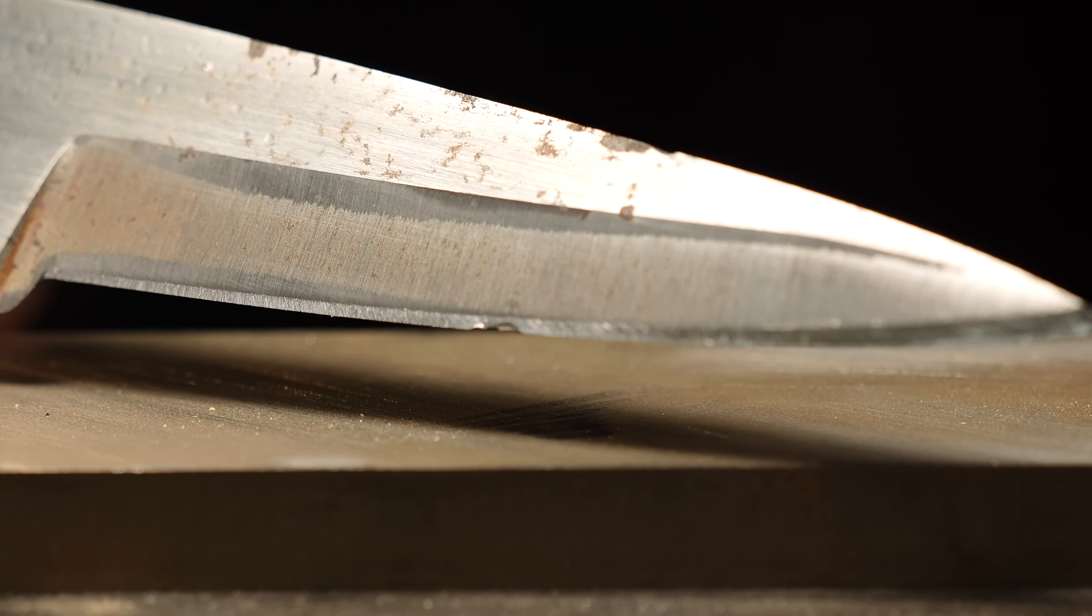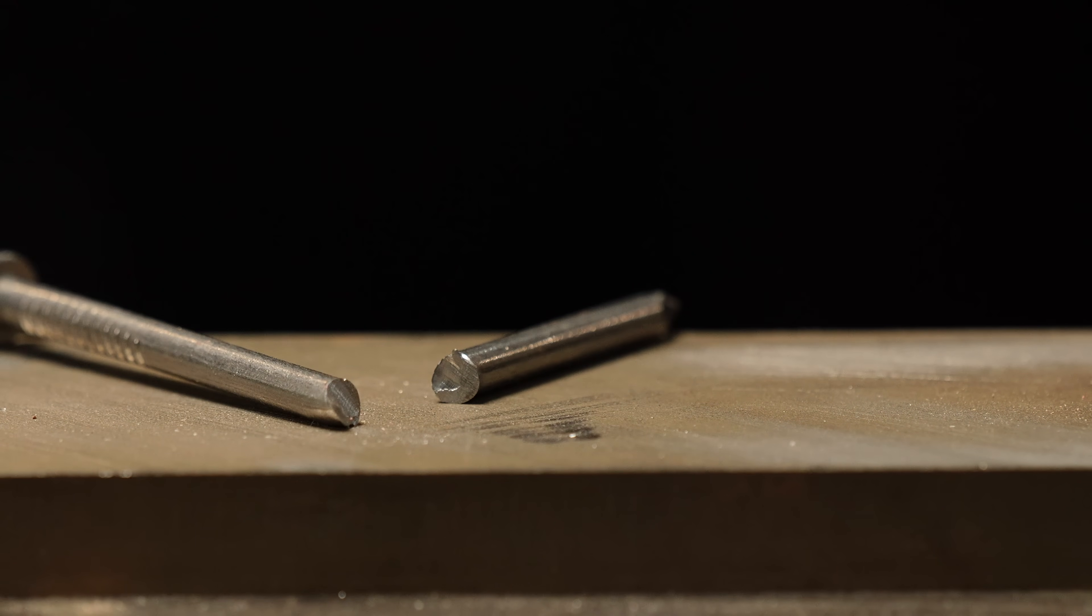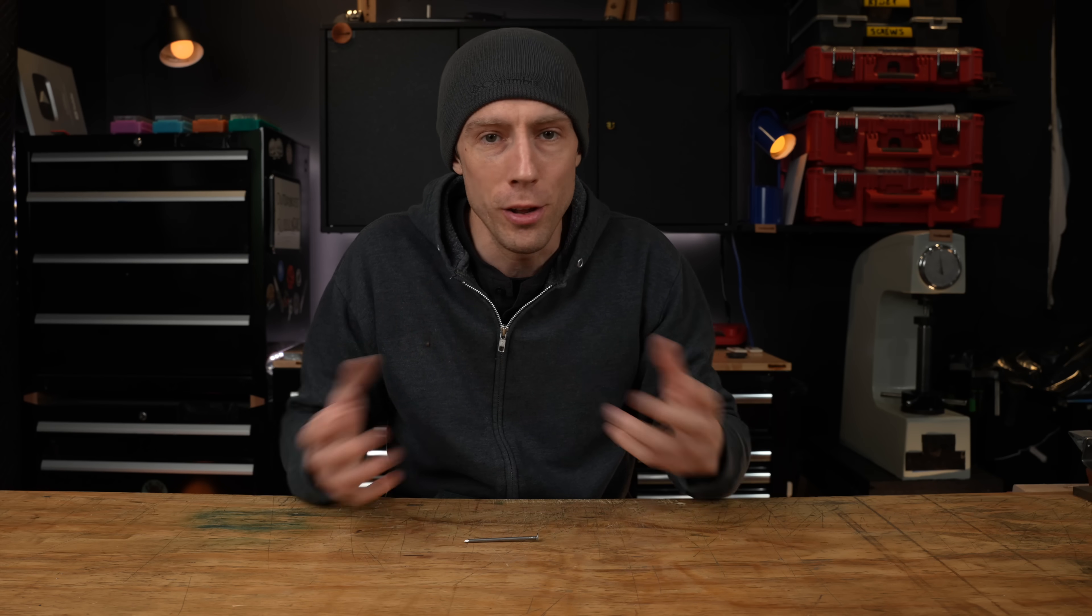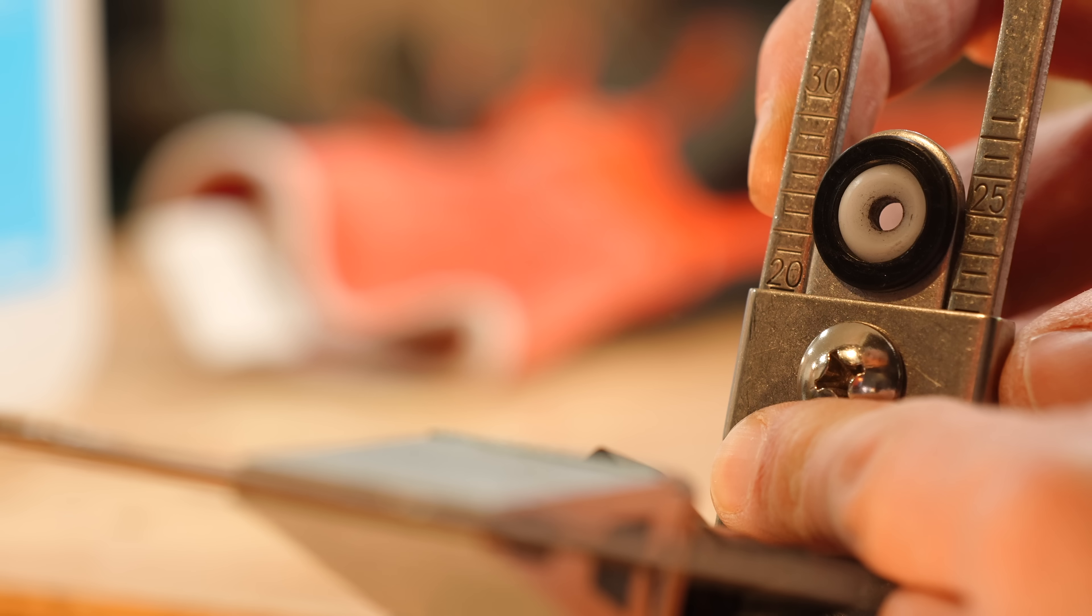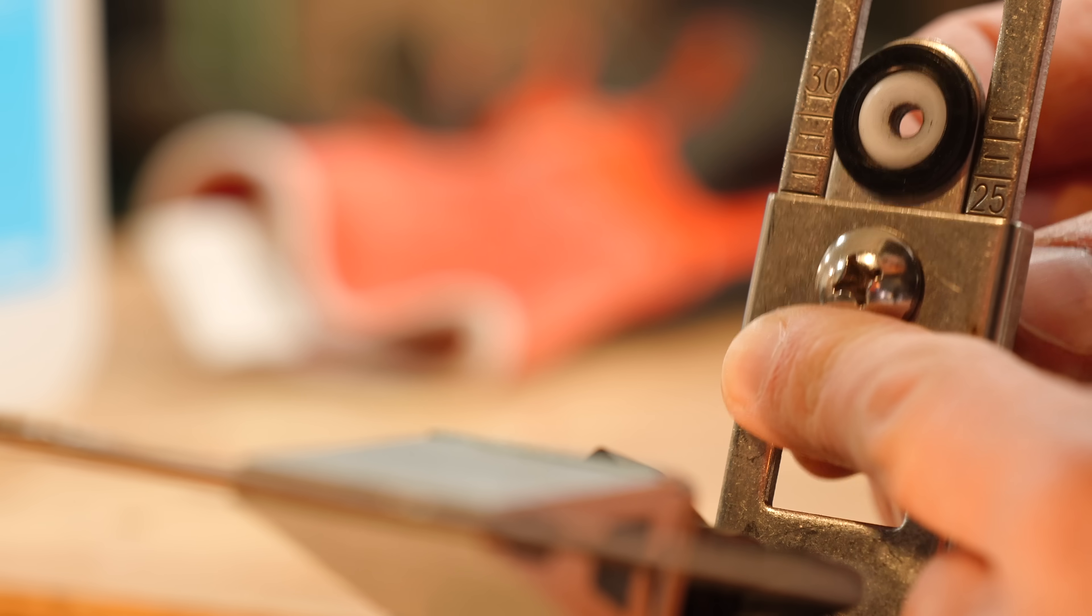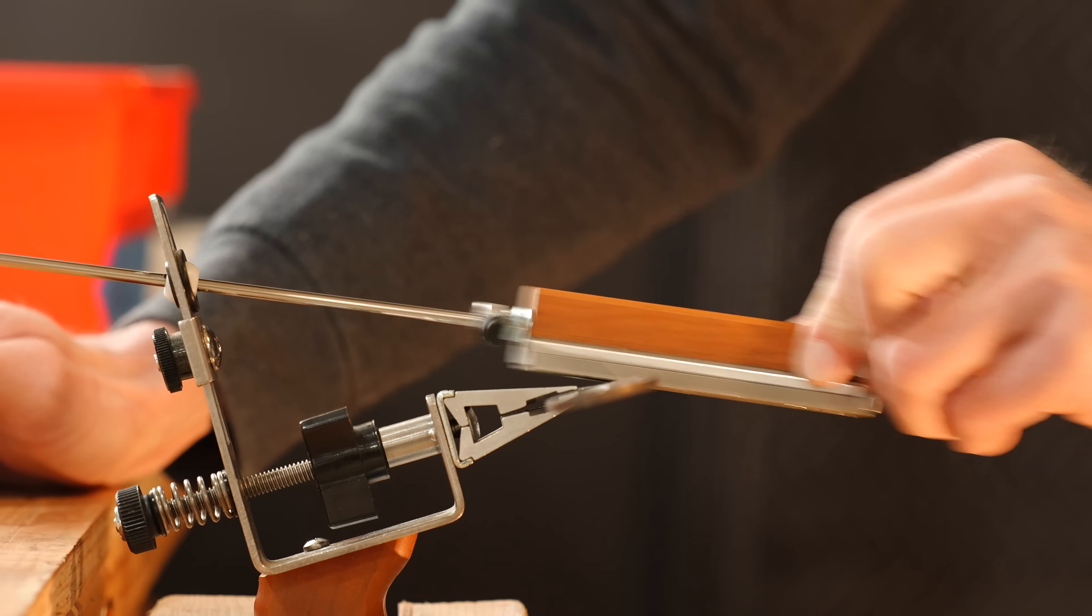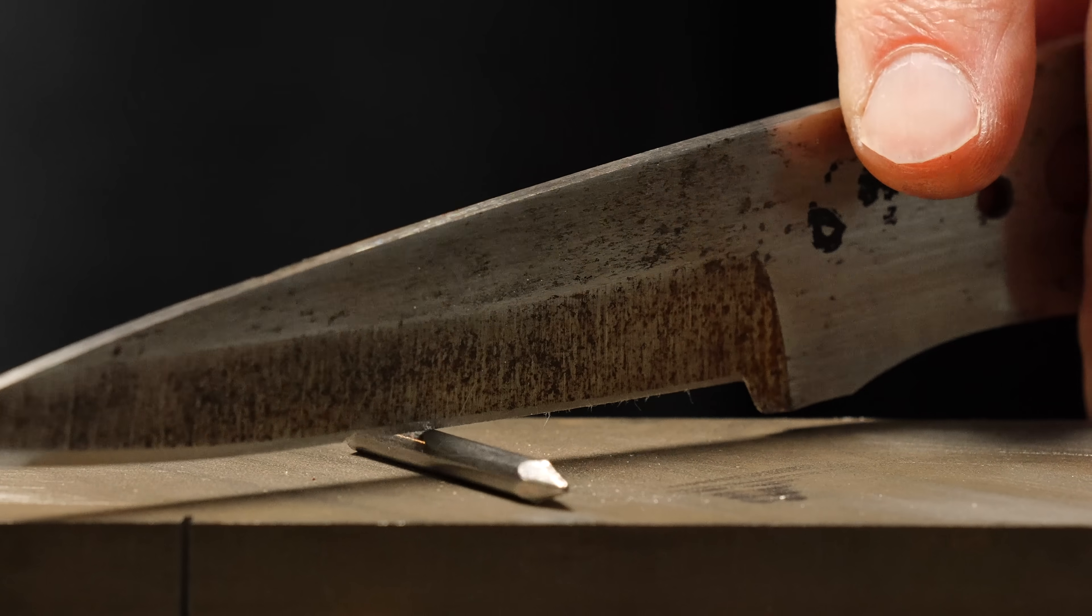Now you may be saying, 'I've seen other knives do this test with zero problems. Surely those knives are some sort of super crazy steel with some super secret crazy heat treatment.' Well, not exactly. Let's see what happens when we increase our sharpening angle from 20 degrees per side to 25 degrees per side.